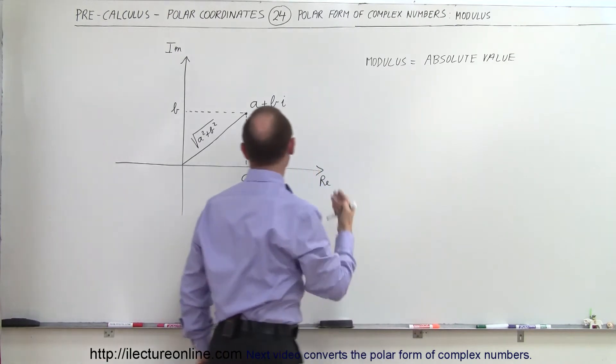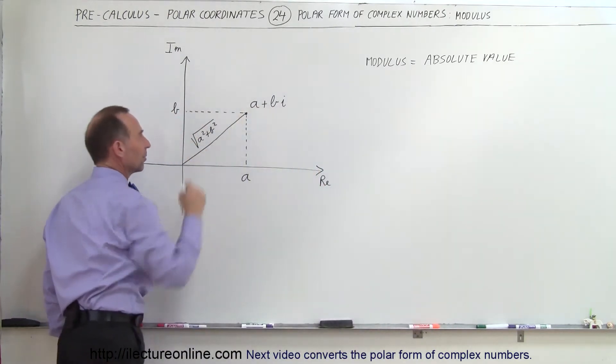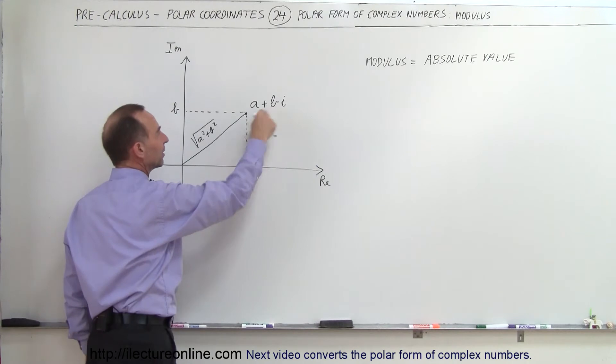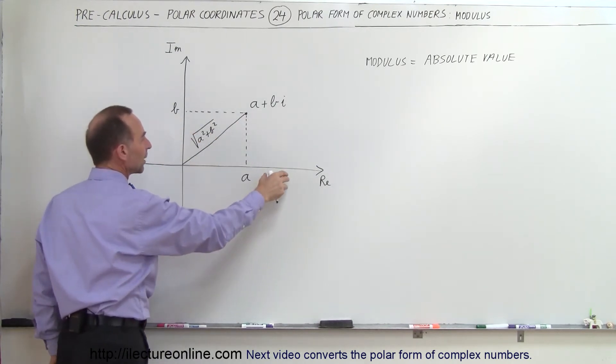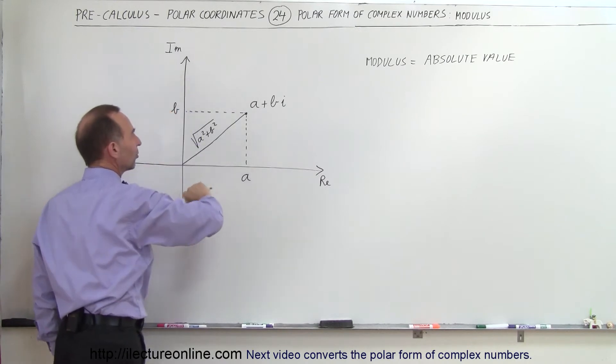So modulus is also known as the absolute value of a complex number. What does that mean graphically? Let's say we have a complex number, a plus bi. a is the real part, bi is the imaginary part. If I draw that on the real and imaginary axis plane right here, we have this point.